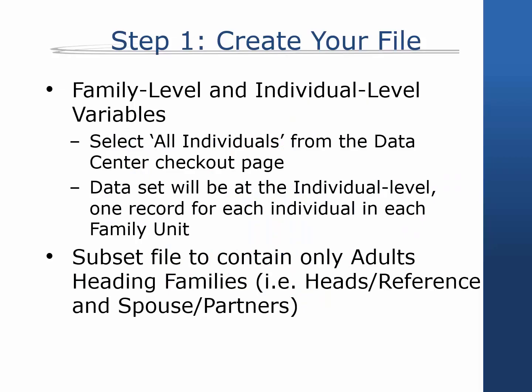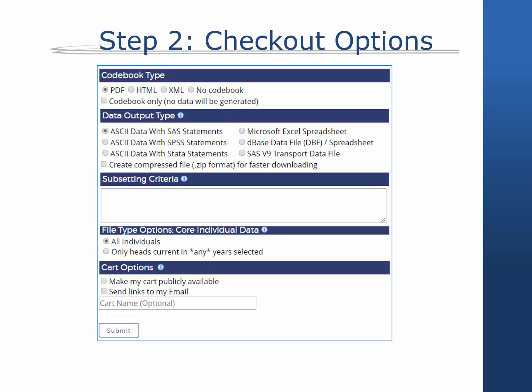Step 1: Create your file. Using the data center, indicate that you would like both family and individual level variables. The data center will automatically merge information from the family file to the individual level file and produce a dataset with the individual as the unit of analysis. The file will automatically include the variables relationship to head or reference person and sequence number, which you will need in order to recode variables in the file.